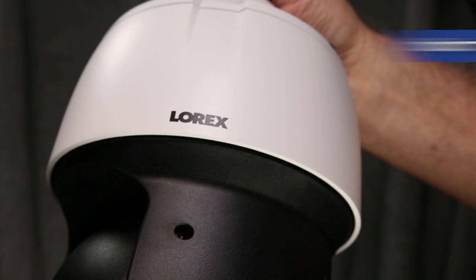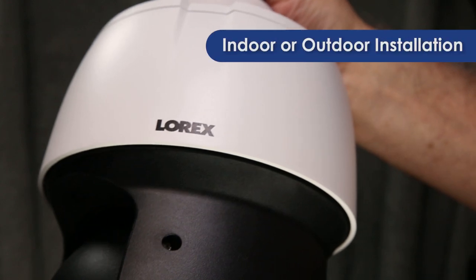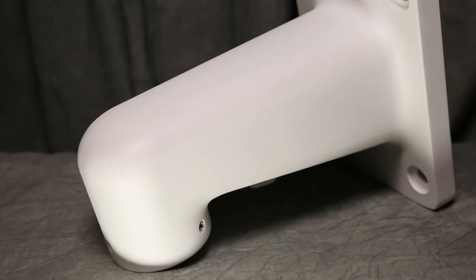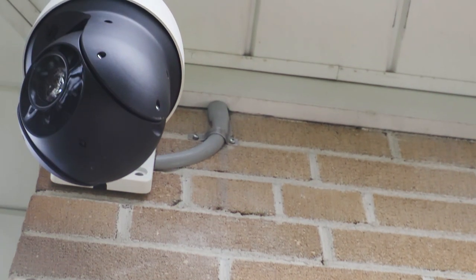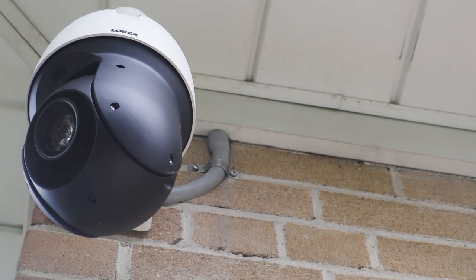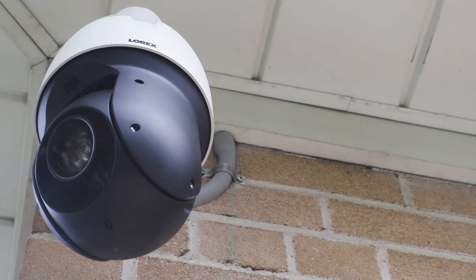The camera can be installed indoors or outdoors and is designed to be horizontally mounted with the included pendant wall mount. Let's see how to install the camera on an exterior brick wall using the unique mounting hardware.